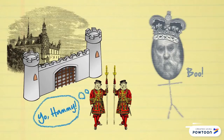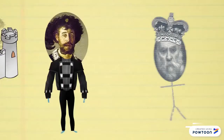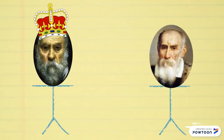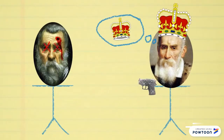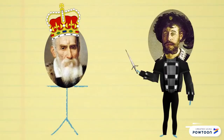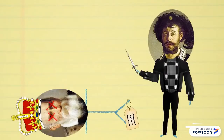Then them guards holler at Hamlet and tell him he gotta check this ghost. So Hamlet step up to his ghost daddy who tell him that his brother Claudius was plottin' on the crown and straight up iced his ass cold-blooded. Ghost daddy tell Hamlet that he gotta strap up and put a toe tag on that fool Claudius. Street justice, know what I mean?